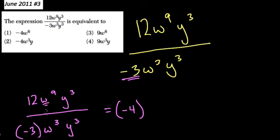W to the 9th over w to the 3rd. Well, we have the same base, right? The base is w. We're dividing, so you subtract the exponents. We have w to the 9 minus 3.